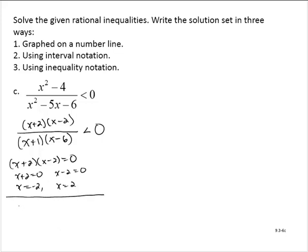The expression is undefined where the denominator equals 0: x plus 1 equals 0 gives x equals negative 1, and x minus 6 equals 0 gives x equals 6. So we have four important points on the number line, which means we'll have five intervals to test.